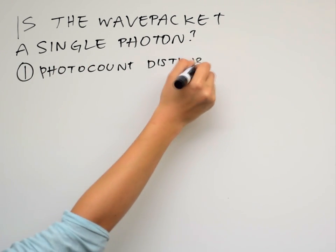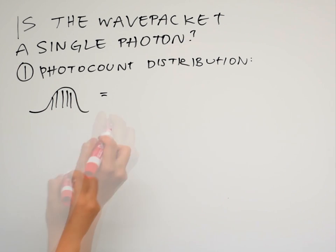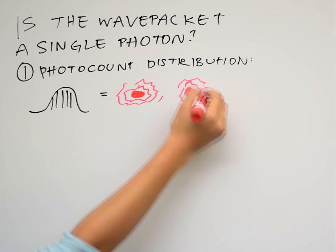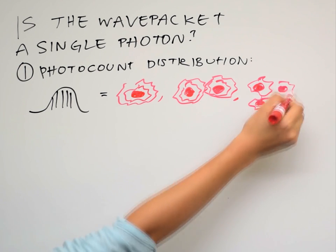One, the photocount distribution. A source may emit more than one photon at a time, so simply put, does it emit only one photon?